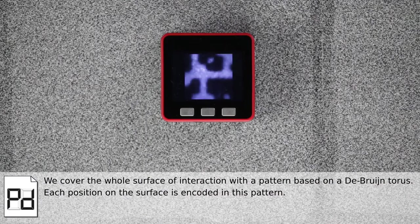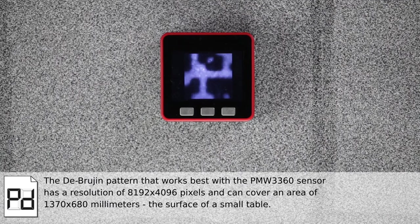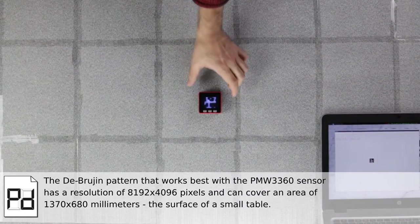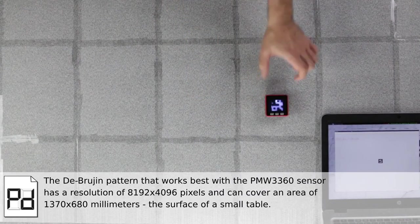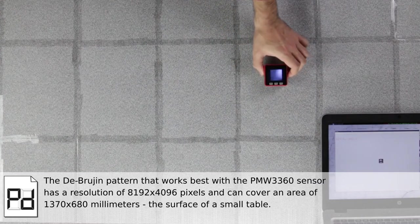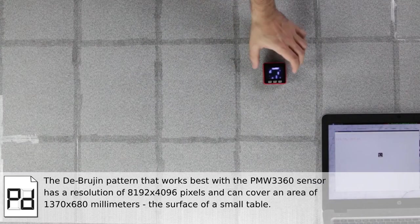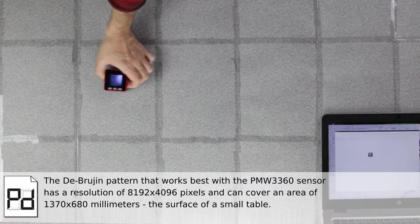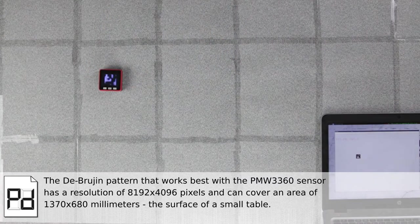We cover the whole surface of interaction with a pattern based on a De Bruijn torus. Each position on the surface is encoded in this pattern. The De Bruijn pattern that works best with the PMW3360 sensor has a resolution of 8192x4096 pixels and can cover an area of 1370x680mm, the surface of a small table.